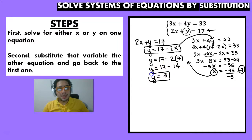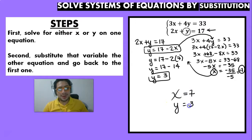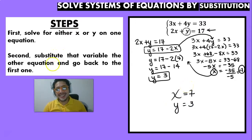So for this system of equations, x is equal to 7 and y is equal to 3. And that is pretty much it for today — see you guys in the next one!